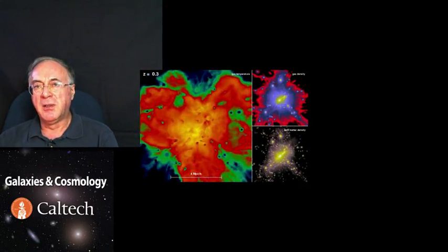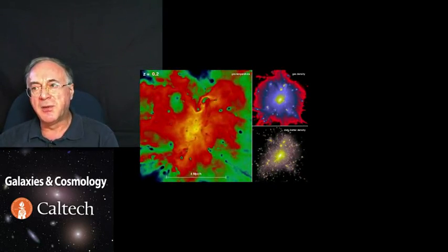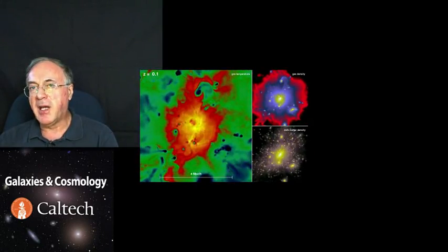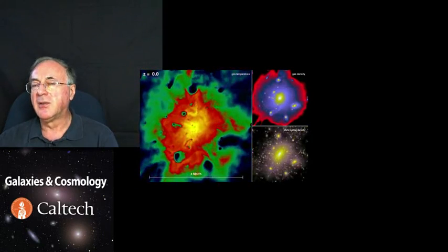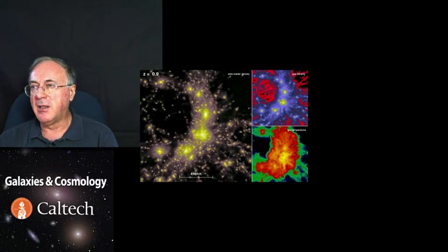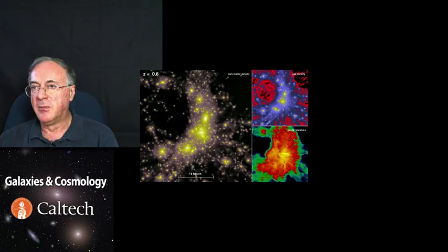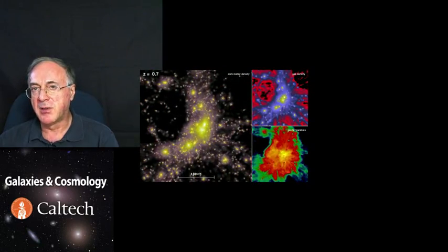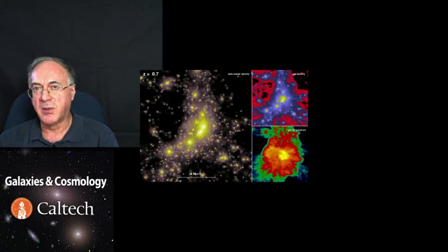As you can see, spherical uniform homogeneous model does not really seem to correspond well to reality. Our spherical top hat model was a useful toy model to understand the basic physics of the collapse of density fluctuations. But the reality is much more complicated. And this is why we need to use numerical simulations to actually figure out what's going on.